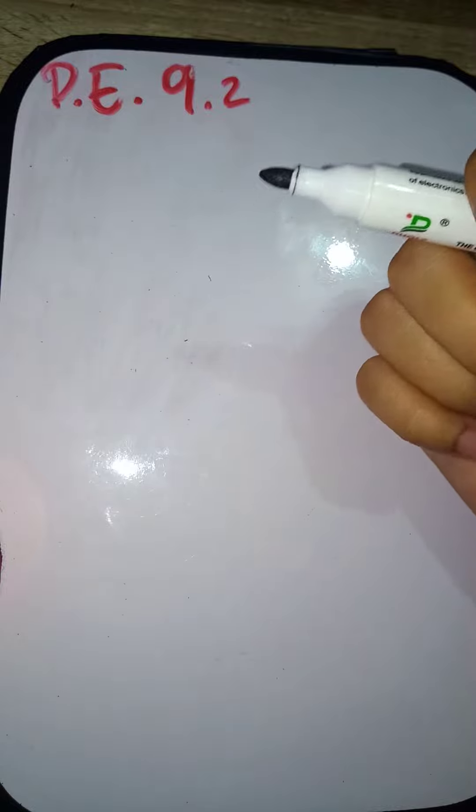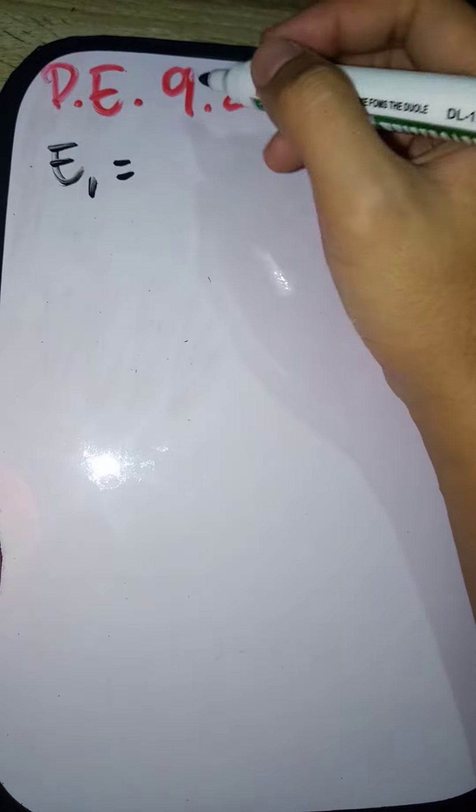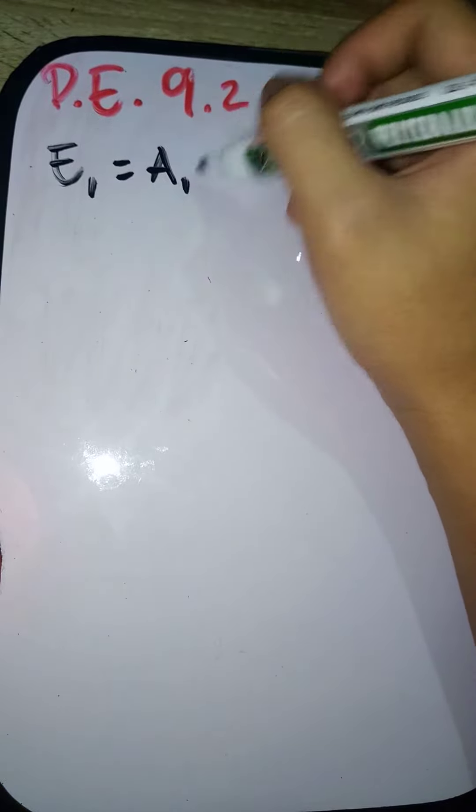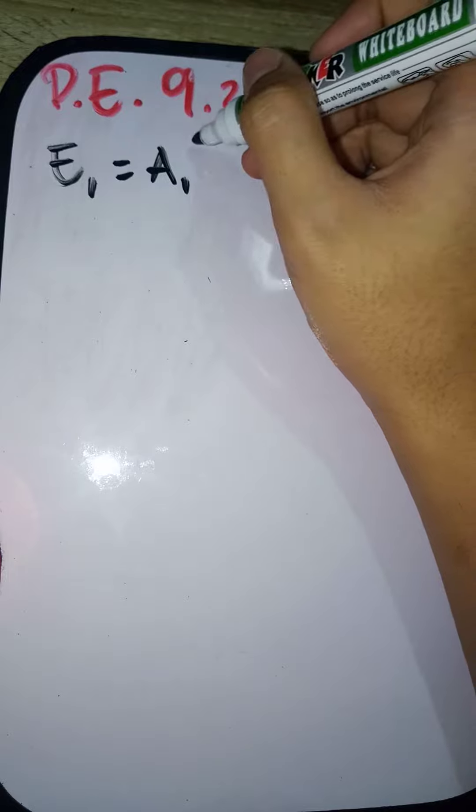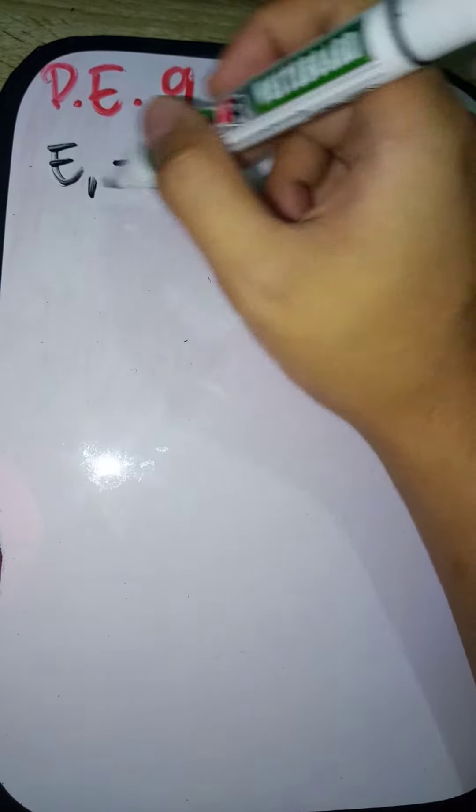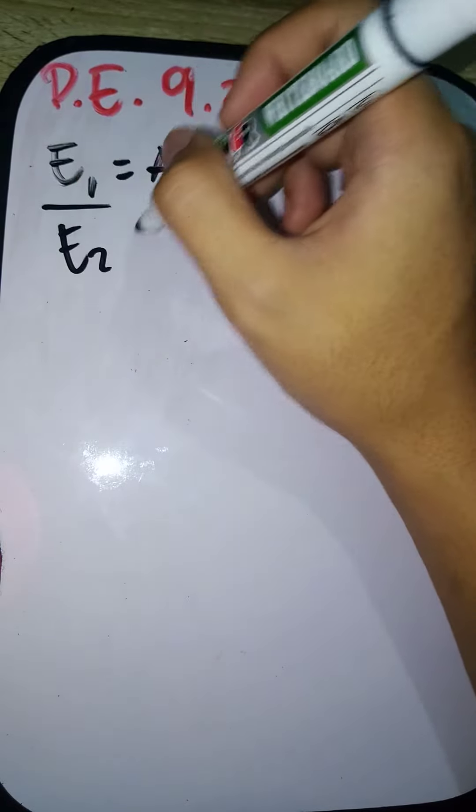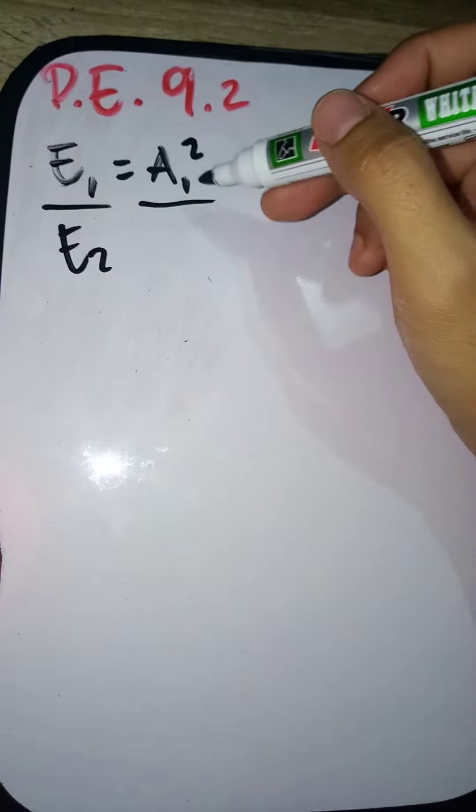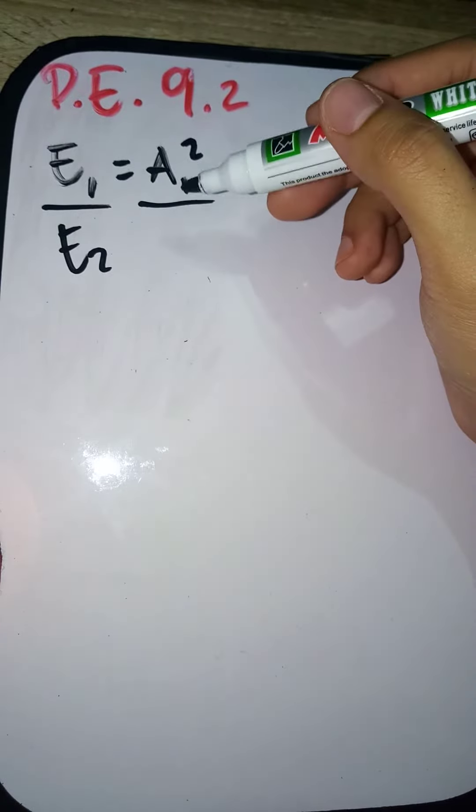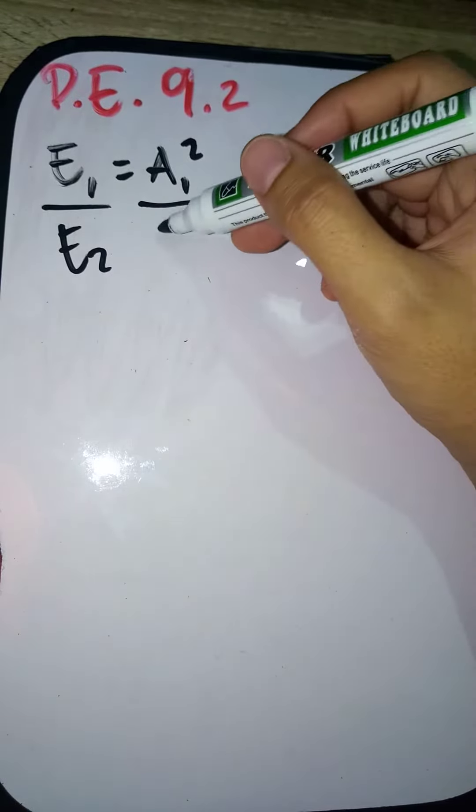We know that the energy of a wave is equal to the squared of its amplitude. So the equation is given by the relationship of that energy and amplitude.